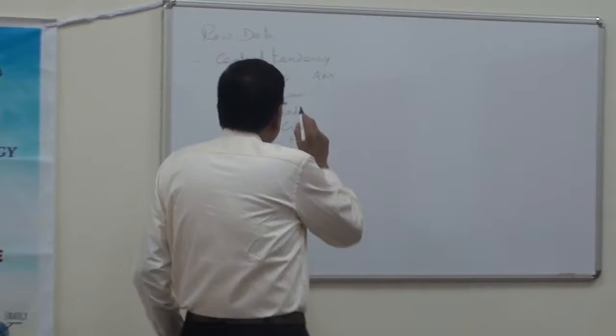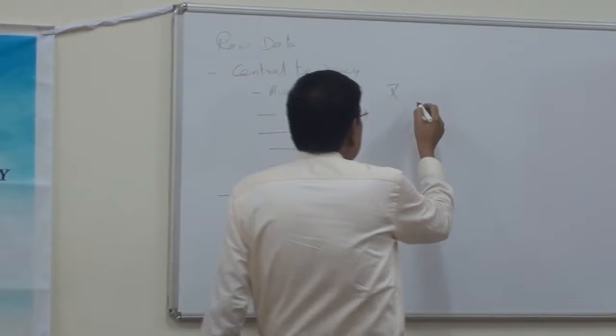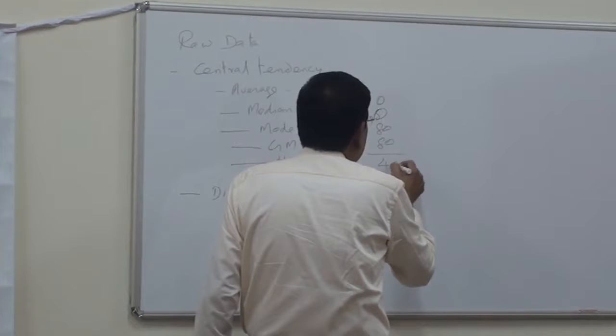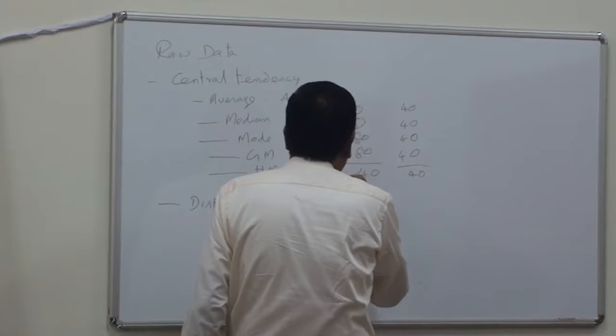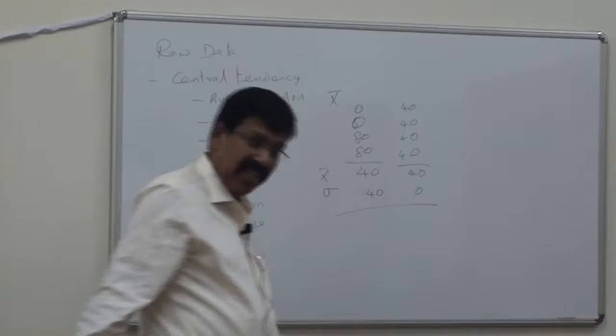Consider the example: x-bar equals 40 for the set {0, 0, 80, 80, 40} and also for {40, 40, 40, 40}. Your mean value equals 40 in both cases. But here the standard deviation will be 40, whereas in the second case it will be 0. If you really calculate, this will be the value — how to interpret that?